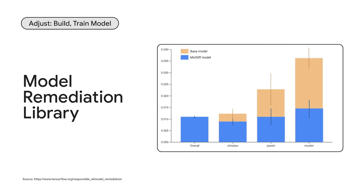MinDiff is a model remediation technique to improve models so that they perform equitably across different subgroups. We're also excited to announce the release of a new model remediation method called Counterfactuals, which discourages classifier predictions from changing solely based on the presence of a sensitive identity word. We've talked about some tooling to support you in the Adjust phase, but keep in mind: tooling is an aid, not a one-shot solution.